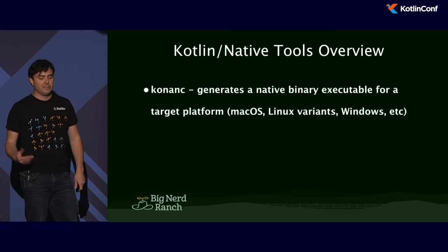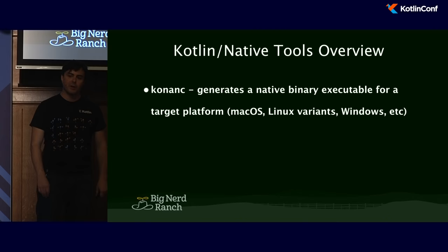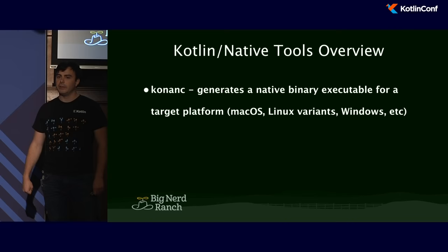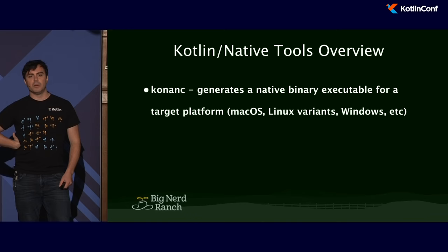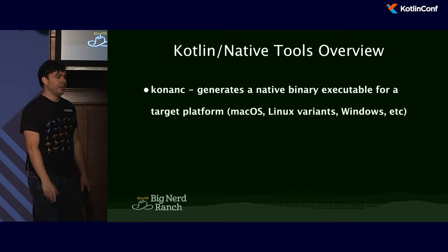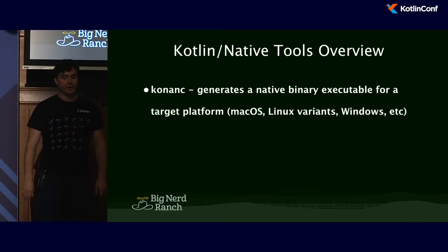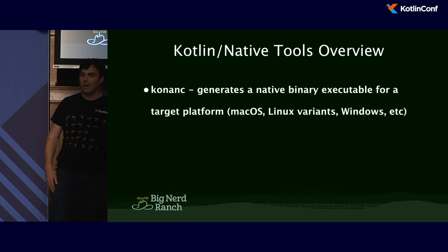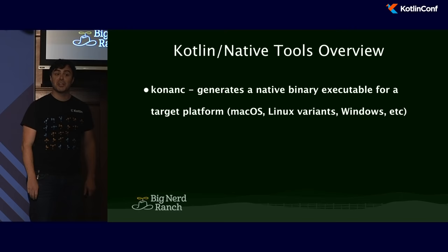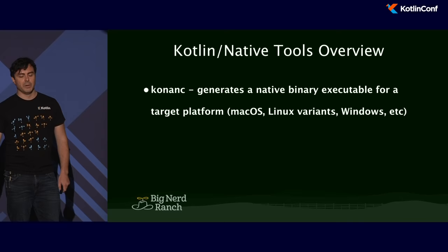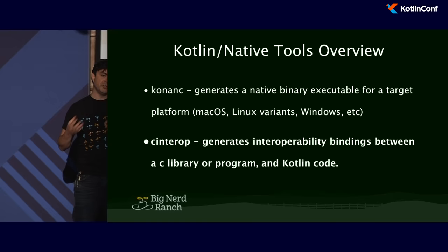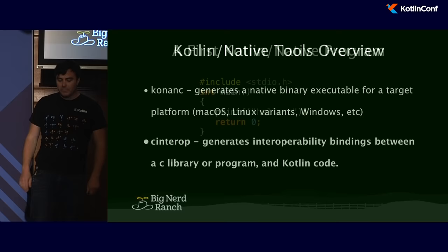Kotlin Native's toolchain is actually pretty simple up front. There are really two main ideas to know about. One is Konan C, the Kotlin Native compiler, which is responsible for generating a binary for a target system — macOS, Linux variants, Raspberry Pi (technically a Linux variant), or even Windows with MinGW. And the C interop portion is what generates stubs that I can actually interoperate with on the binary level.